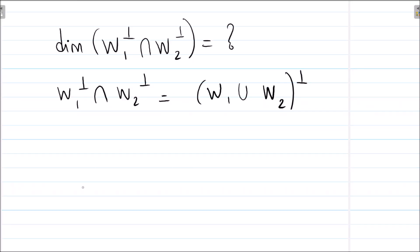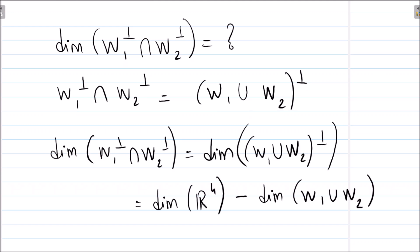The answer is yes, this is manageable. By De Morgan's law, we know that W1⊥ ∩ W2⊥ equals (W1 ∪ W2)⊥. So the dimension of W1⊥ ∩ W2⊥ equals the dimension of (W1 ∪ W2)⊥.